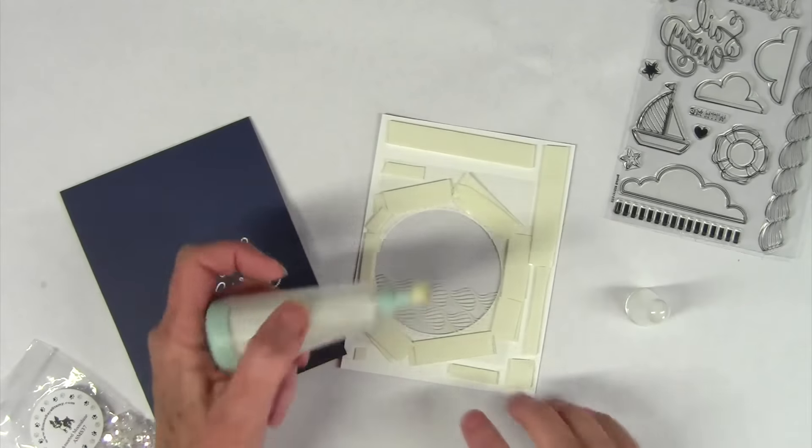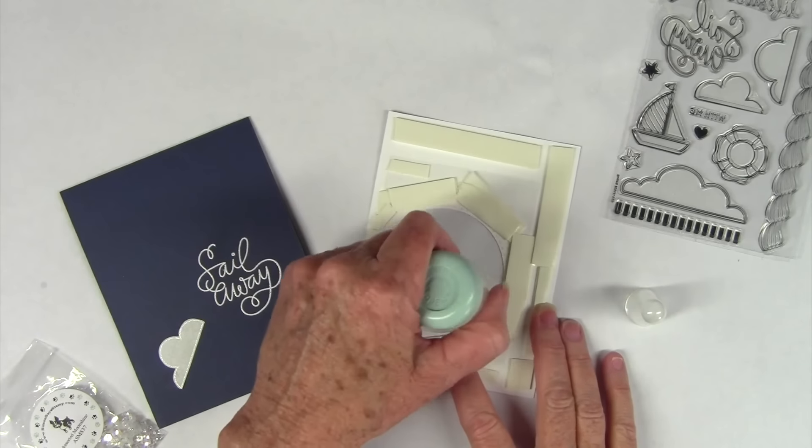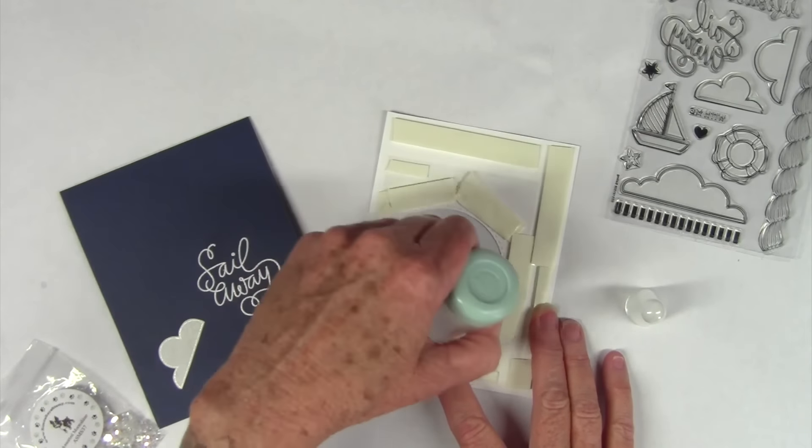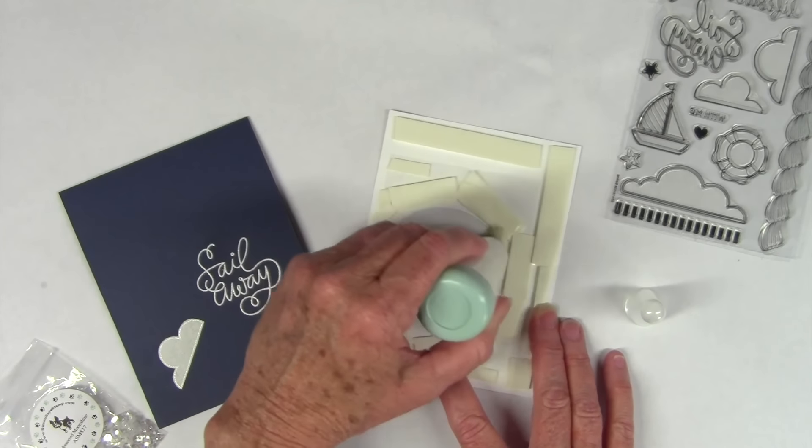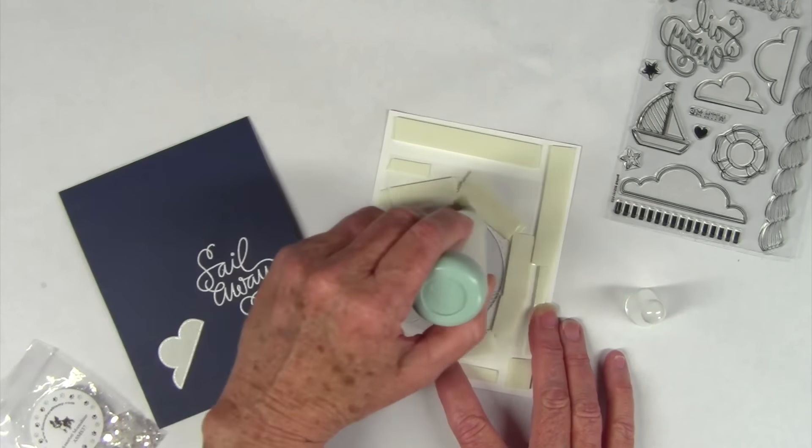I have used my tape runner to put my acetate in place and I've also used some double-sided foam tape in place. I'm using my powder tool to go around that foam tape just to powder it up so the sequins don't stick to the sides of the tape.